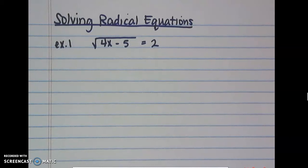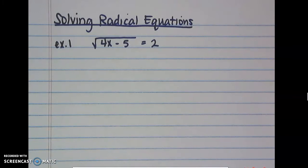Today we're going to be solving radical equations. We have the square root of 4x minus 5 equals 2, and our entire goal is to figure out what x equals.